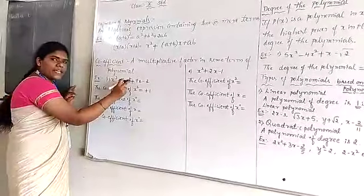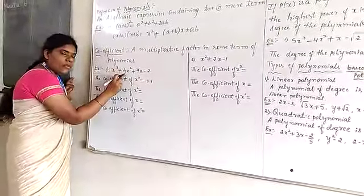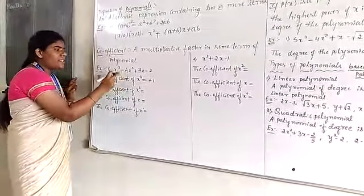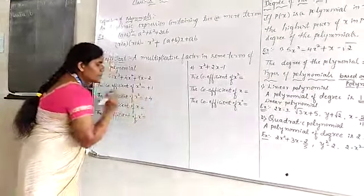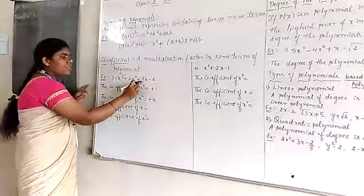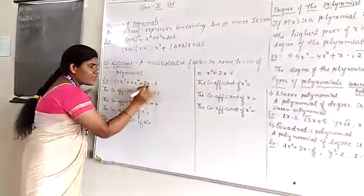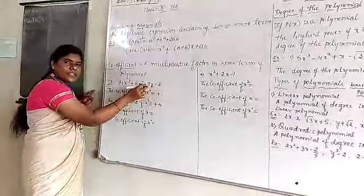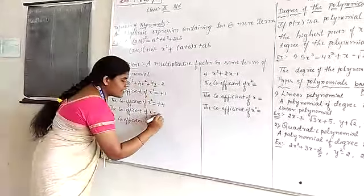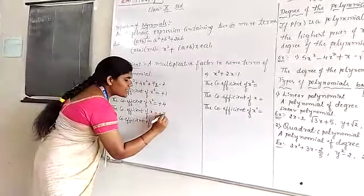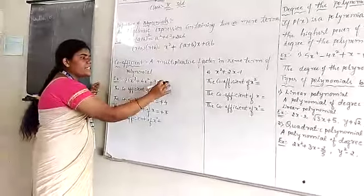The coefficient of x² — how much is there? 4. Which sign is there? Plus, so it is +4. Next, the coefficient of x — how much is there? 7 is there. Which sign is there? Plus, so it is +7.